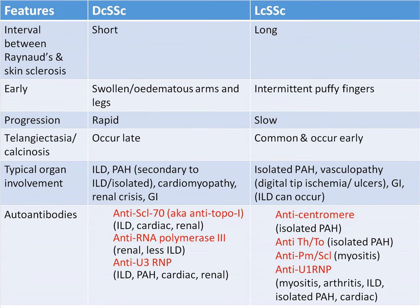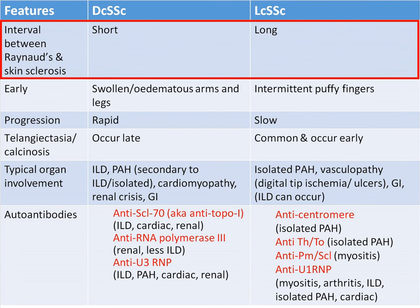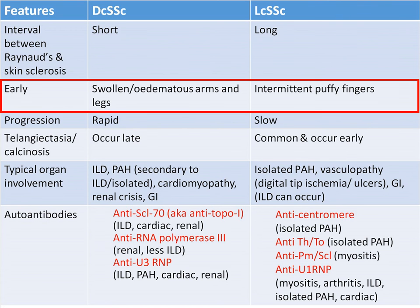It is important to understand the unique features of the diffuse and limited subtypes as they run different disease courses, have different autoantibody associations, and are at risk of different organ complications. The interval between Raynaud's phenomenon and skin sclerosis onset is short in the diffuse subtype — typically within one to two years — compared to up to 10 years in the limited subtype. Early in the disease course, patients with diffuse cutaneous SSc may have swollen, edematous fingers, arms, and legs that may be mistaken for arthritis or peripheral edema, whereas those with limited subtype may have intermittent puffy fingers.